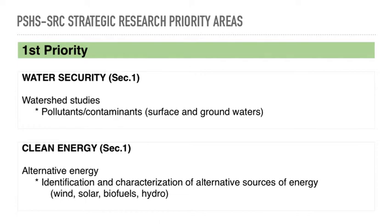We have here studies on pollutants and contaminants — surface and groundwaters. So if you're interested in tracing, for example, the phosphorus levels from a mountainous area built with farmland and then comparing it with the phosphorus level of an adjacent body of water, like a lake or a river basin, and comparing if there's similarity in the amount of phosphorus and the possible repercussions of such levels — that can be a research topic.